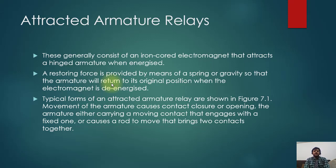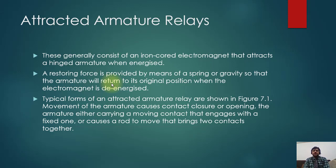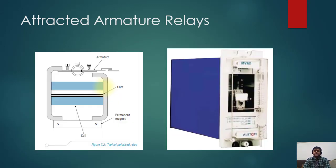Attracted armature relays generally consist of an iron core electromagnet that attracts a hinged armature when energized. A restoring force is provided by means of a spring or gravity so that the armature will return to its original position when the electromagnet is de-energized. Movement of the armature causes contact closure or opening — the armature either carries a moving contact that engages with a fixed one, or causes a rod to move that brings contacts together.